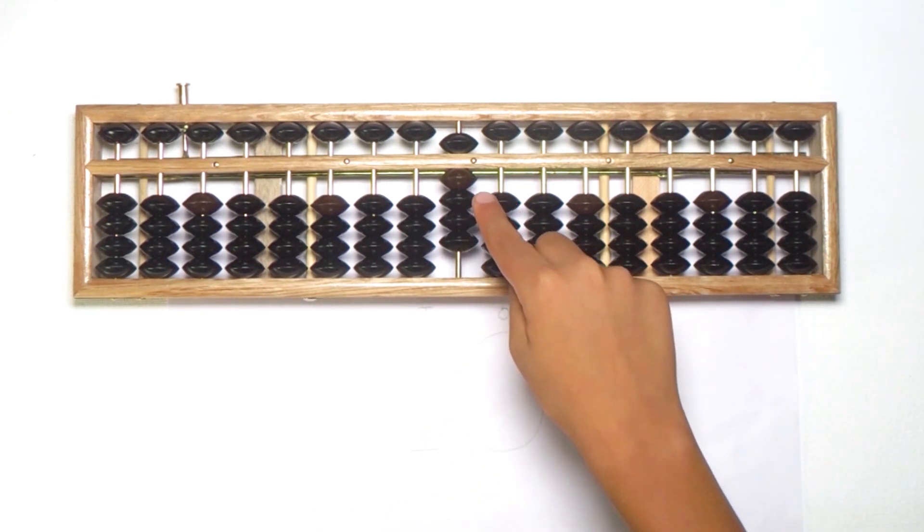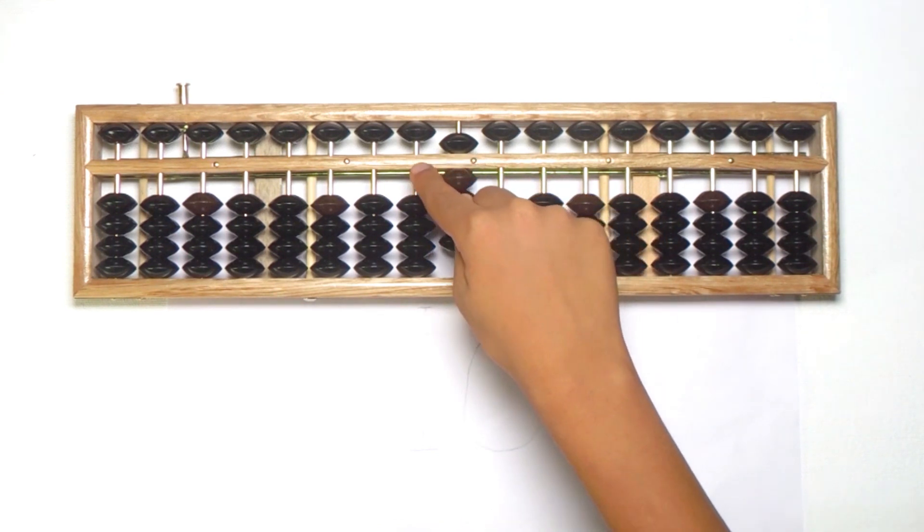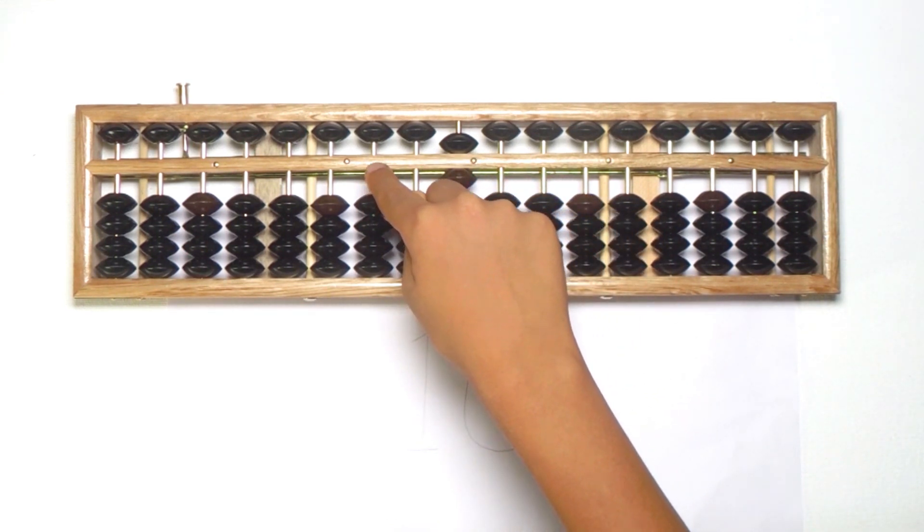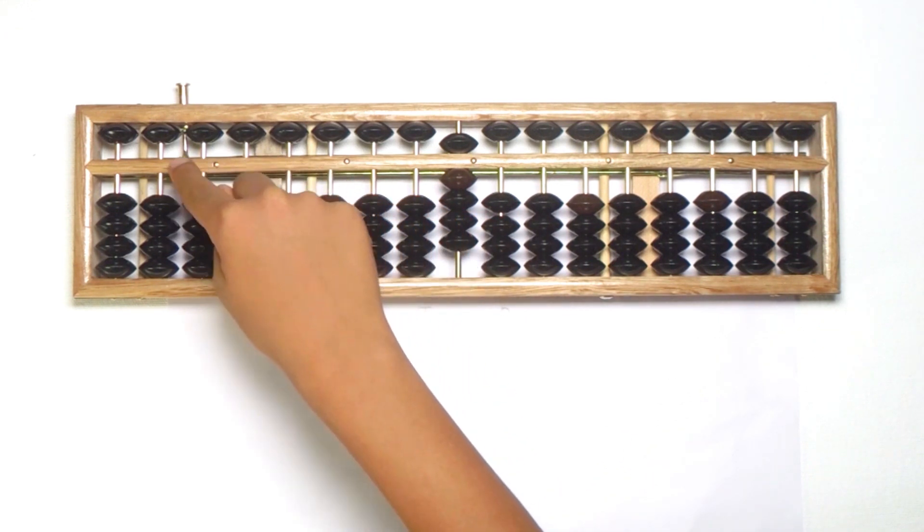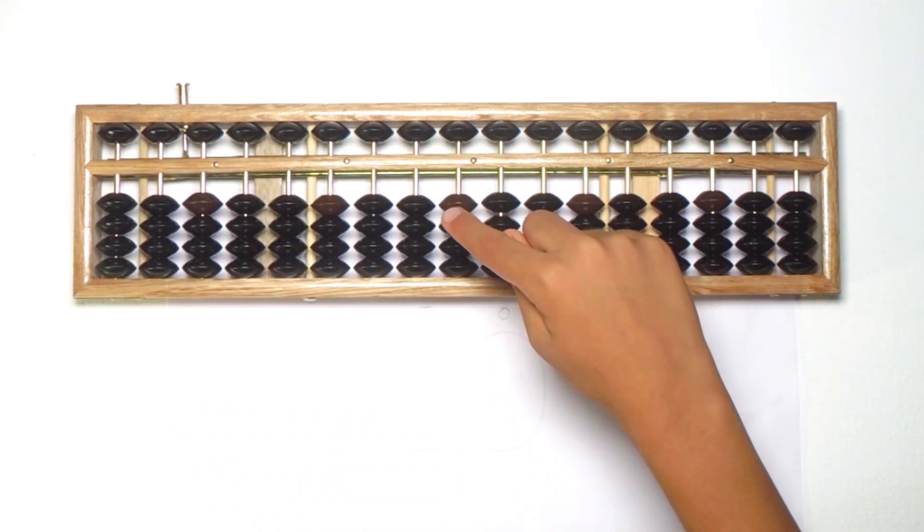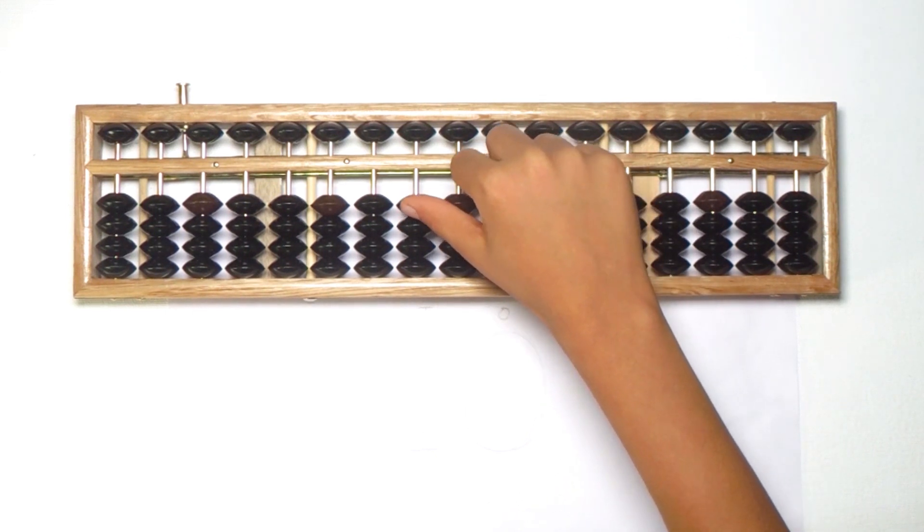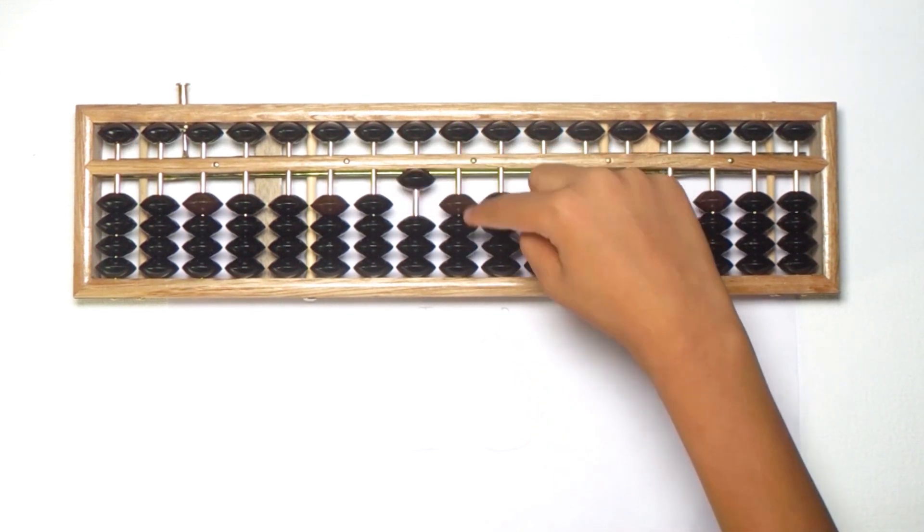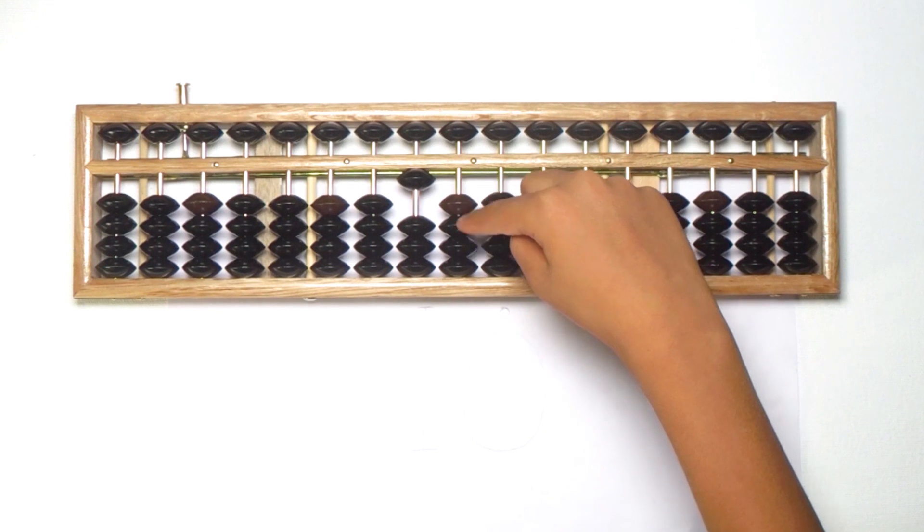In Abacus, this is unit place, tens place, hundred place, thousand place, and so on. So let's clear the Abacus and start putting one at tens place. And zero means nothing to add at unit place. So this is ten.